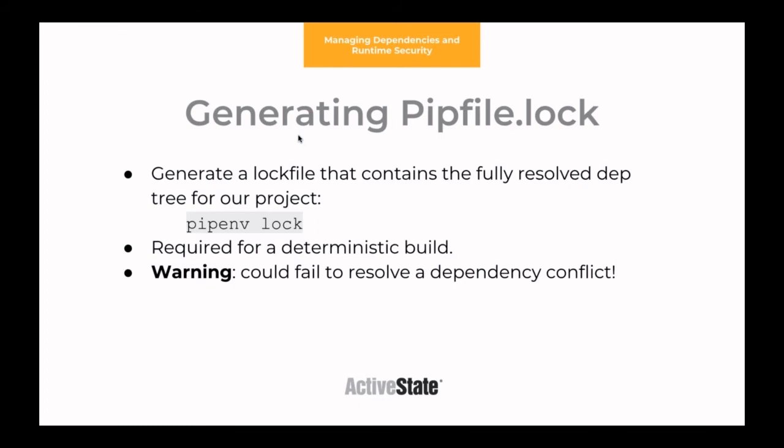A warning: it is possible that pipenv lock may fail — it's not guaranteed to succeed. It could fail to resolve a dependency conflict. What that means is if package A depends on package B and package C also depends on package B but on a different version, there's no obvious way to resolve that. You'd need to manually update one of the package versions or potentially patch out the conflicting functionality. There's no guaranteed way for it to do it automatically.